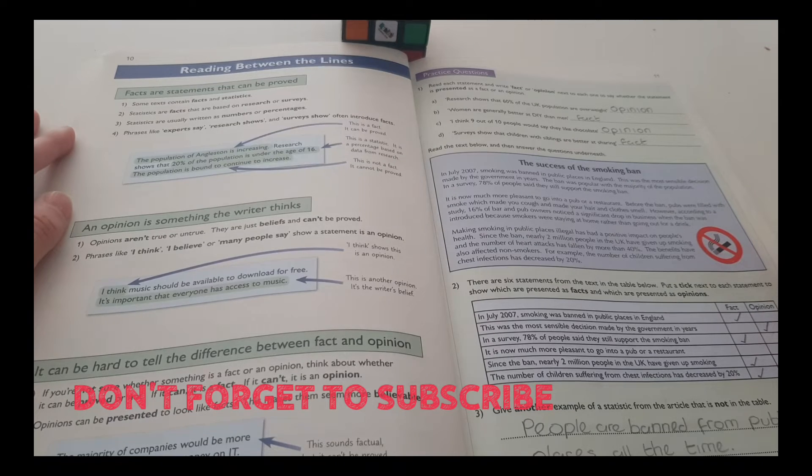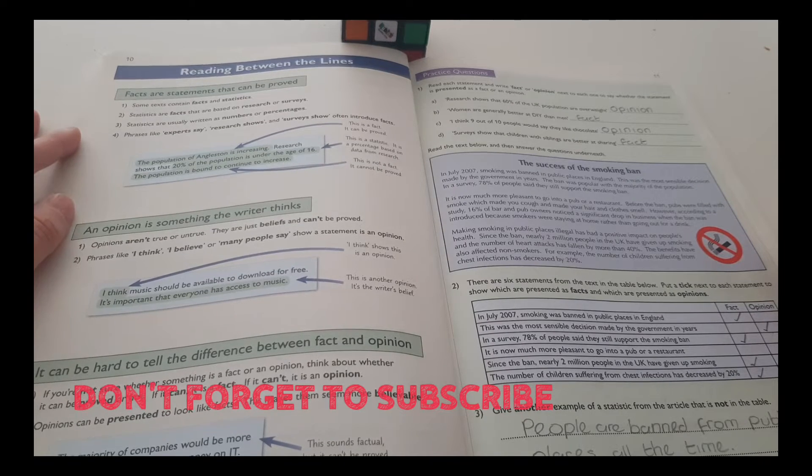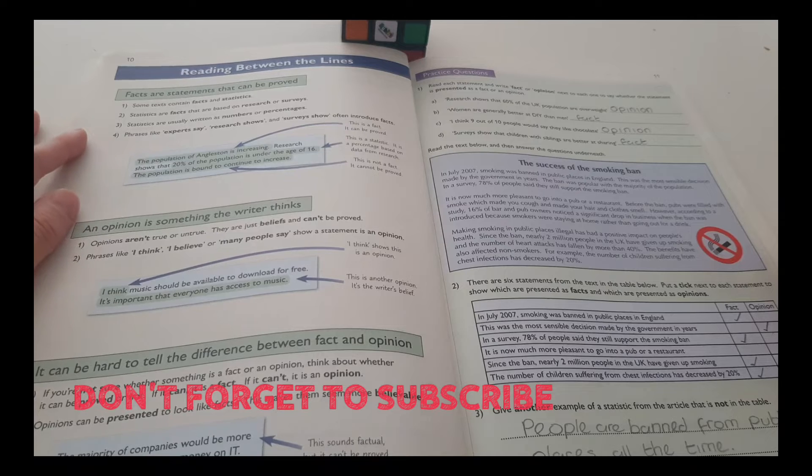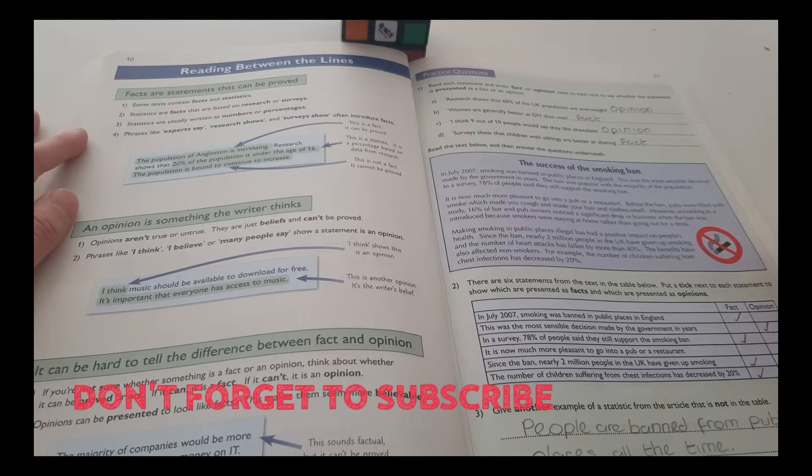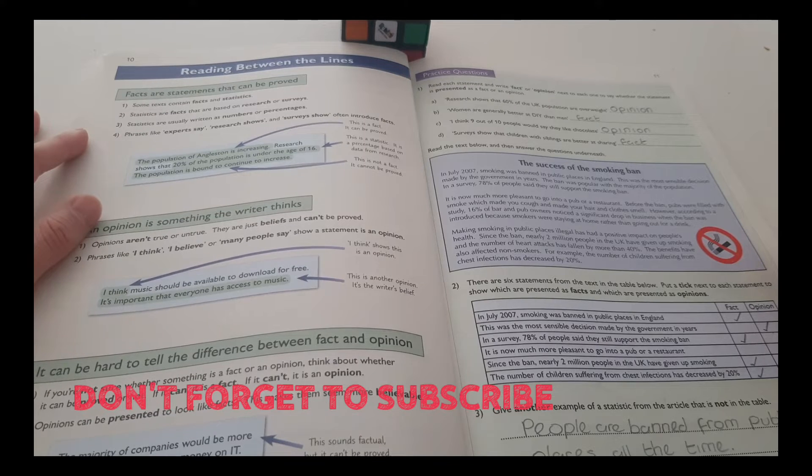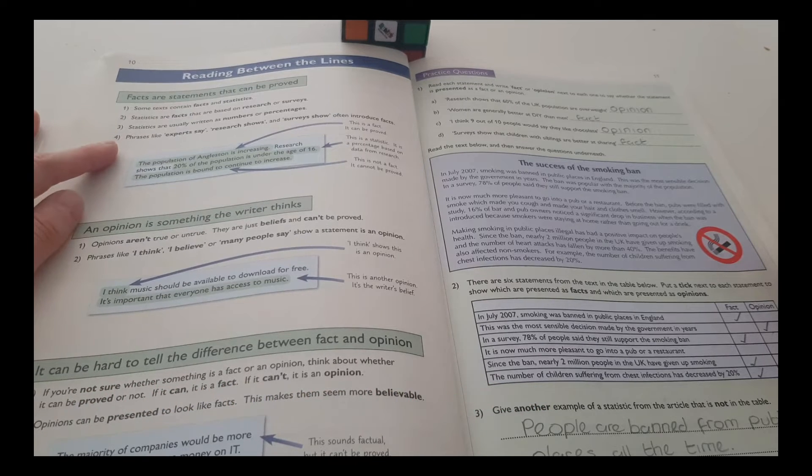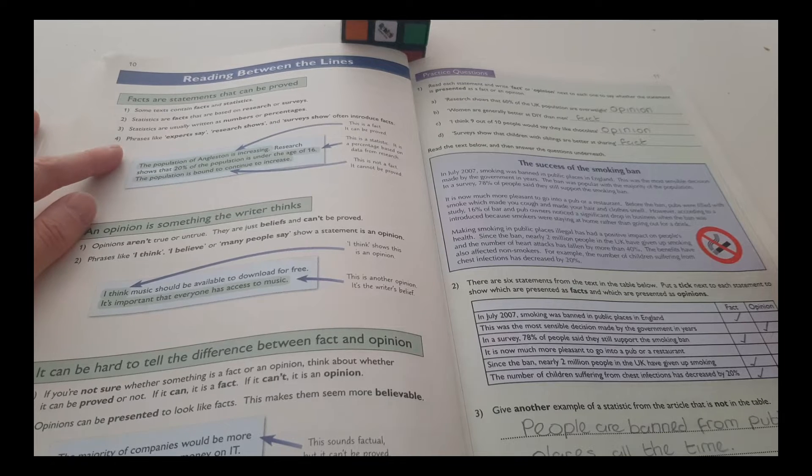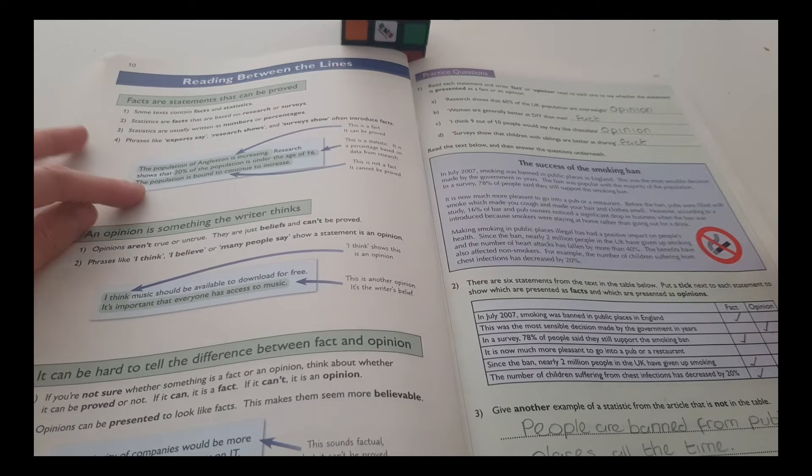Facts are statements that can be proved. Some texts contain facts and statistics. Statistics are facts that are based on research or surveys. Statistics are usually written as numbers or percentages. Phrases like experts say, research shows, and surveys show often introduce facts.